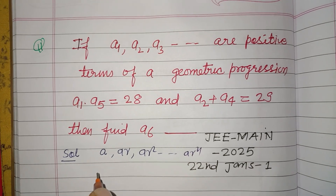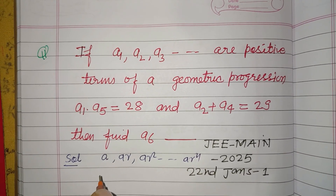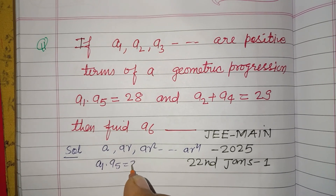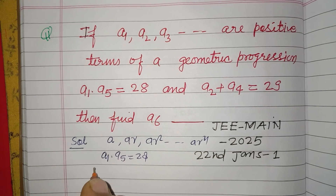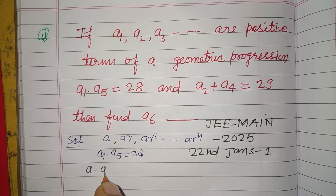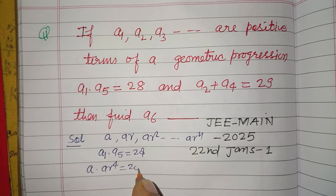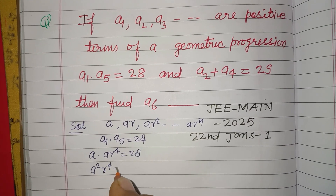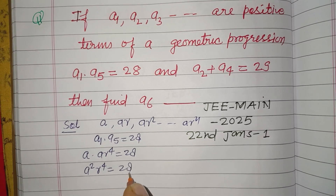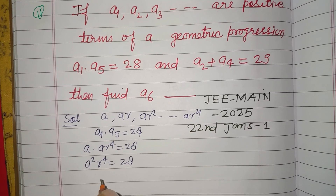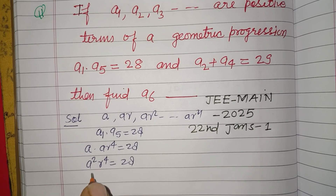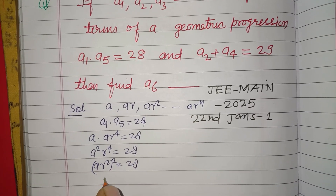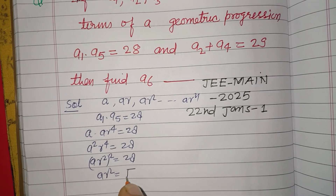It is given that a1 × a5 = 28. So a1 = a and a5 = ar⁴, giving us a²r⁴ = 28. This can be written as (ar²)² = 28.